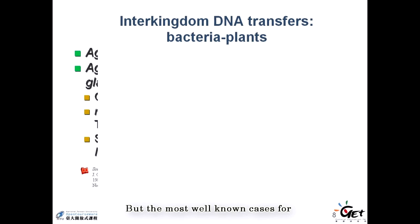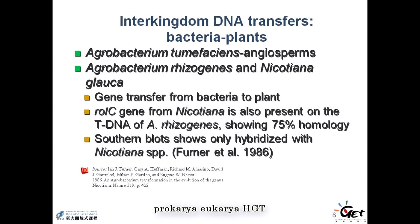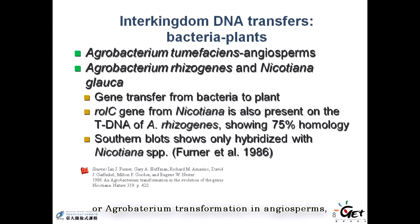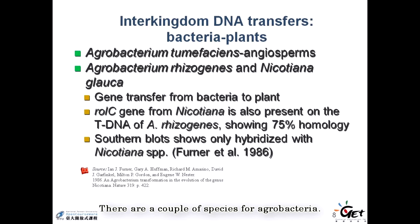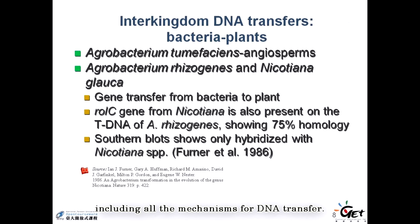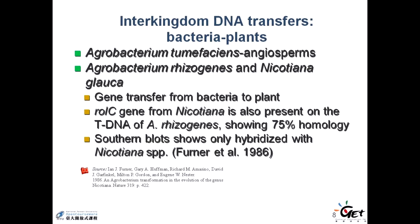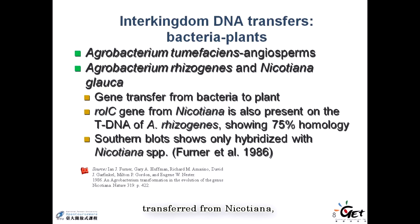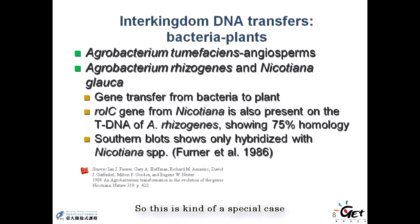The most well-known case for prokaryote-to-eukaryote HGT is probably Agrobacterium tumefaciens transformation in angiosperms. There are a couple of Agrobacterium species, and this system has been studied in very great detail, including all the mechanisms for DNA transfer. There is also evidence that particular genes have already been transferred from Nicotiana and also from Agrobacterium, making this a very special case for DNA transfer.